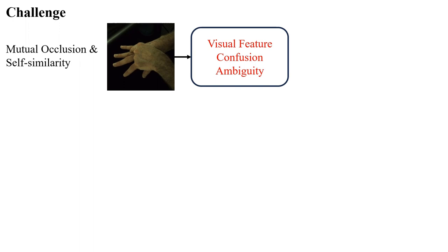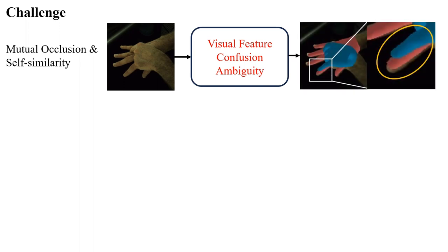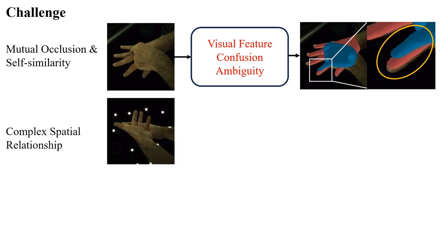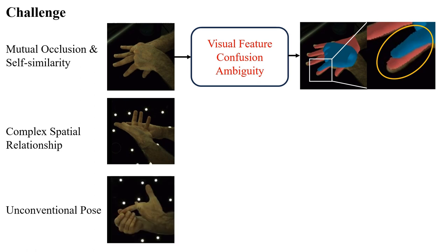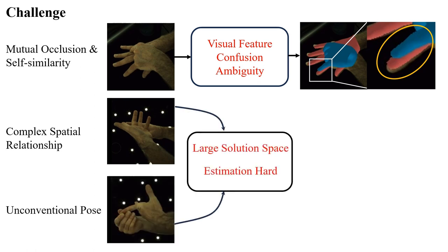On the other hand, interacting hands have complex spatial relationships, which significantly increases the solution space of hand pose, making it more difficult for the network to make predictions. This problem can lead to incorrect predictions of the spatial relationships of the hands.